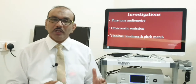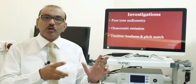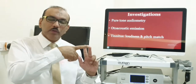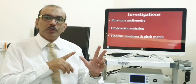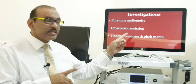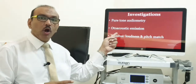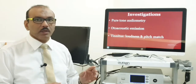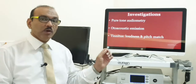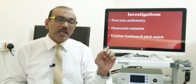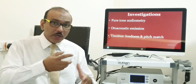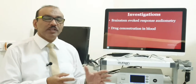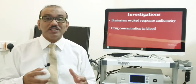Coming to investigations, these are mainly concentrated on hearing, tinnitus, and dizziness. To rule out the severity of hearing loss, we need to do a hearing test — that is pure tone audiometry, otoacoustic emission, and sometimes BERA. As far as the tinnitus sound is concerned, we can know how loud it is and what is the pitch, and accordingly we can treat it. For dizziness, sometimes we need to do a video nystagmogram, that is called VNG.